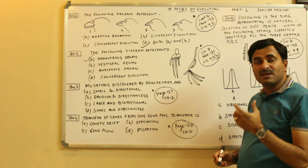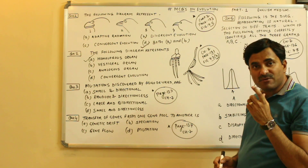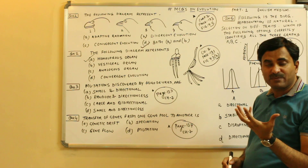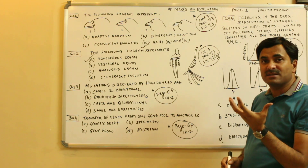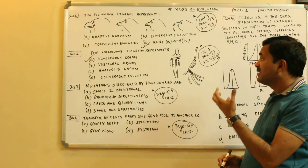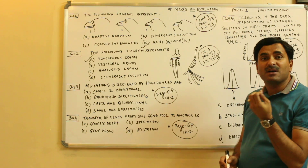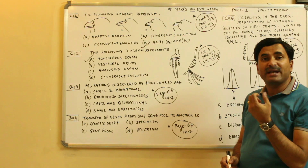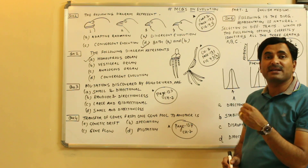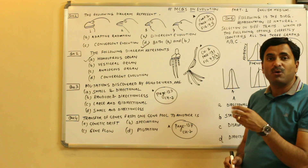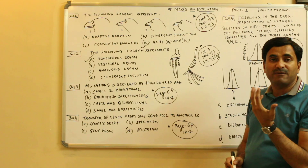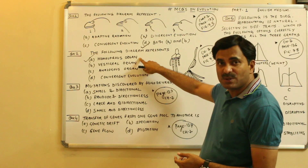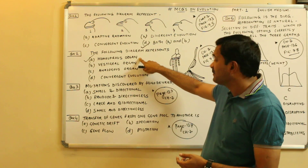Homologous organs are organs which are the same in structure but have different functions. You may have seen the diagram in NCERT showing the forelimb of a human being, a cheetah, and a bat — all structurally the same but with different functions. So the answer is homologous organ.